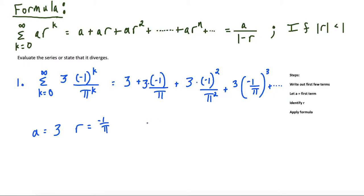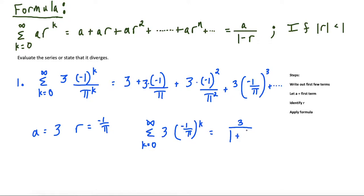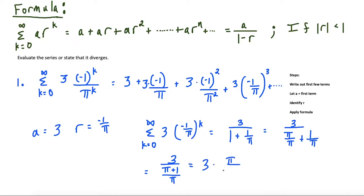To calculate the sum: the summation from k equals zero to infinity of three times negative one over pi to the k is equal to — using the formula — a over one minus r, which is three over one minus negative one over pi. Since r is negative, this changes to one plus one over pi. Working this out: the denominator is pi over pi plus one over pi, giving us three over pi plus one over pi, which rearranges to three times pi over pi plus one — a final answer of three pi over pi plus one.